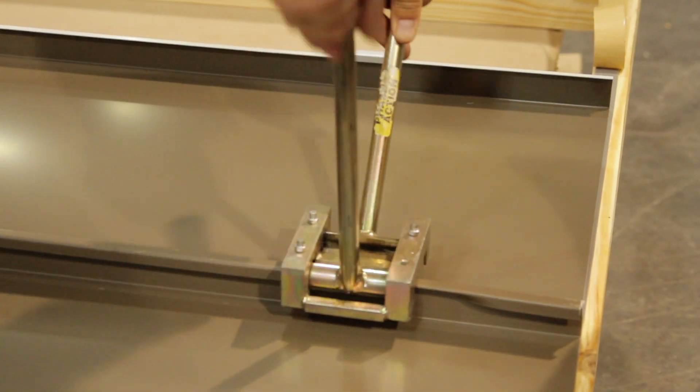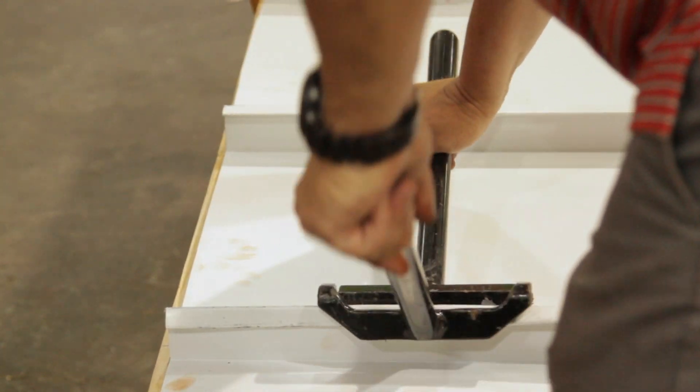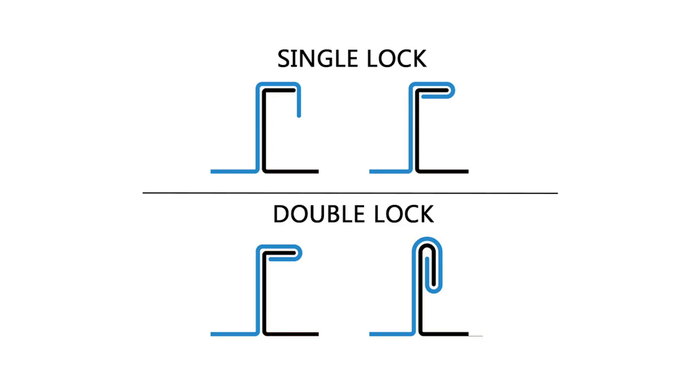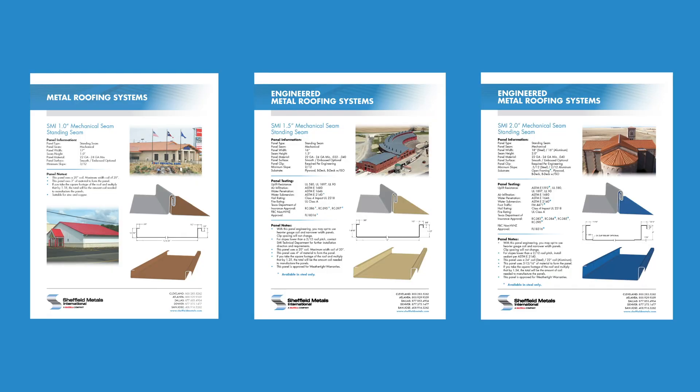The best profiles for low slope applications are going to be mechanically seamed panels. These panels don't snap together; instead, they are seamed together using a special tool, which means the ribs are bent and folded together to create that panel engagement. We always recommend a 180-degree or double fold seam, which means there's less chance of it becoming unseamed and less chance for water intrusion. Sheffield Metals has three mechanically seamed panel profiles: a one inch, a one and a half inch, and a two inch profile.